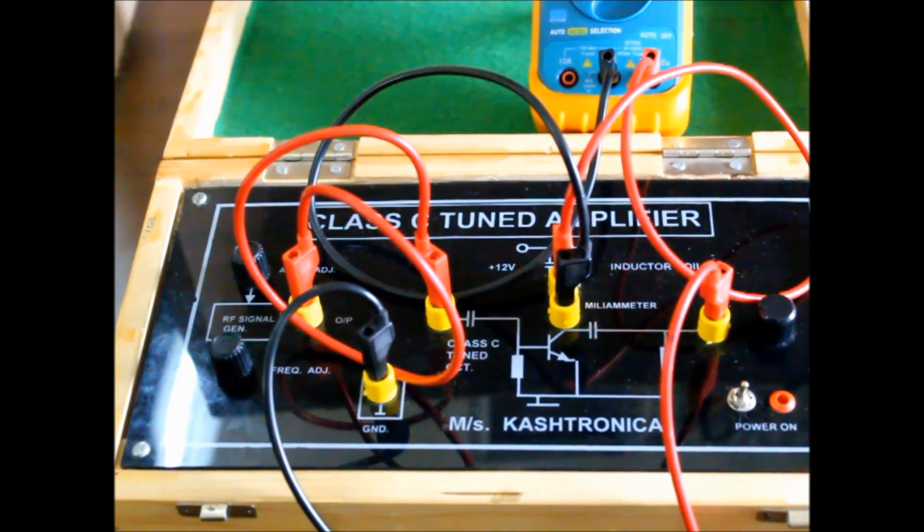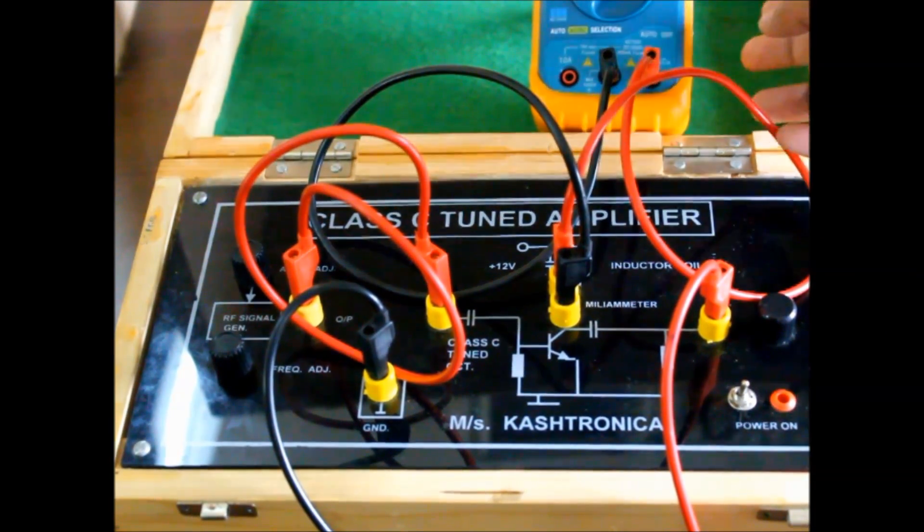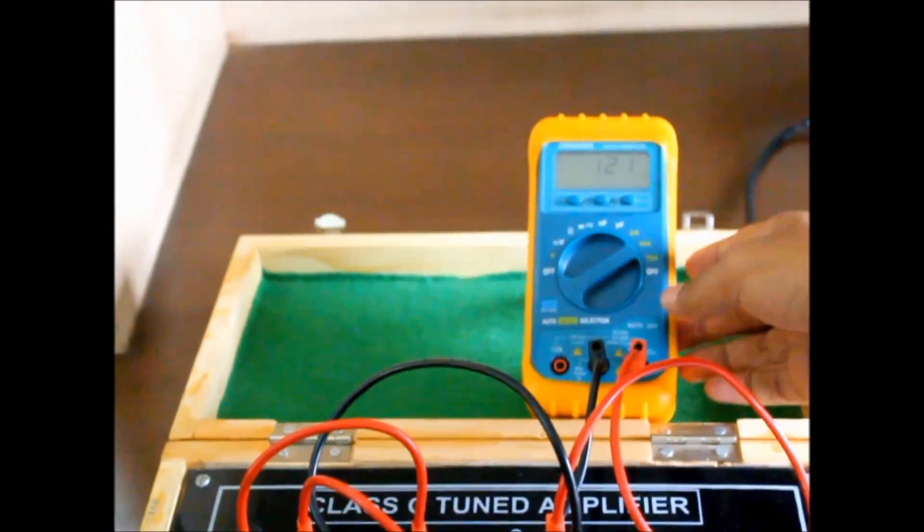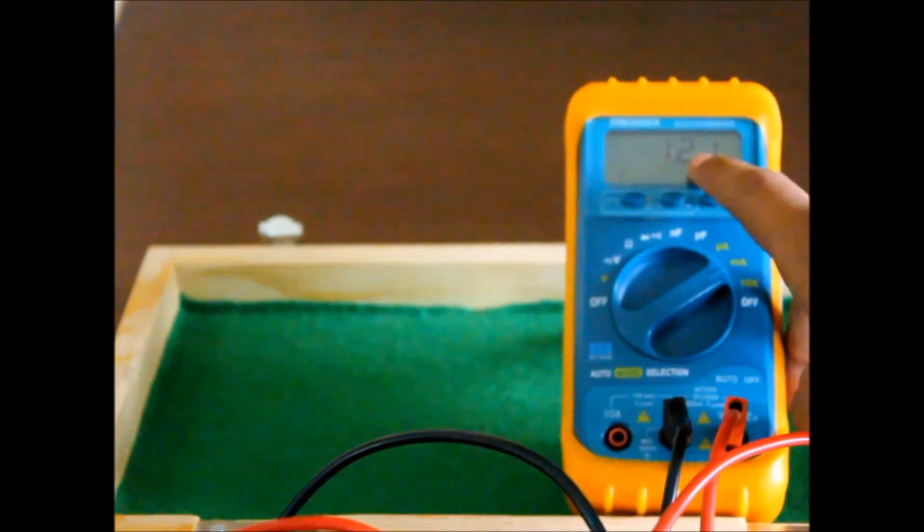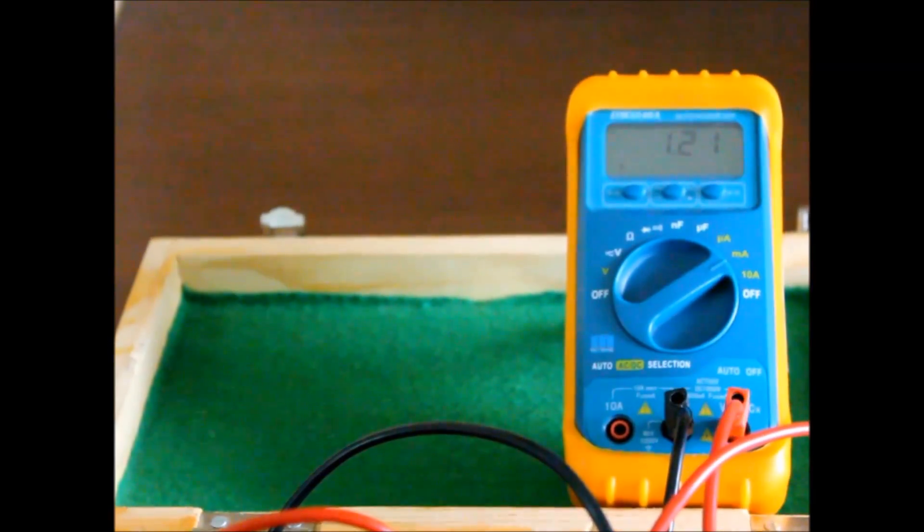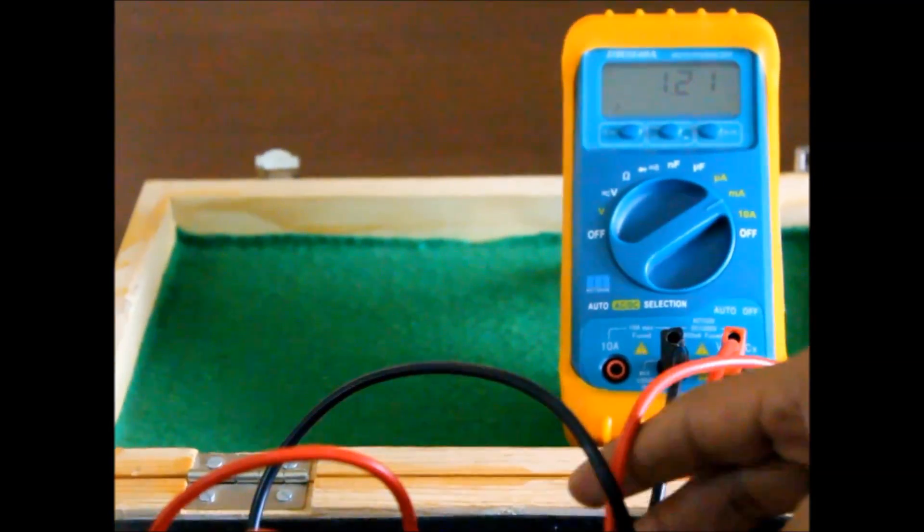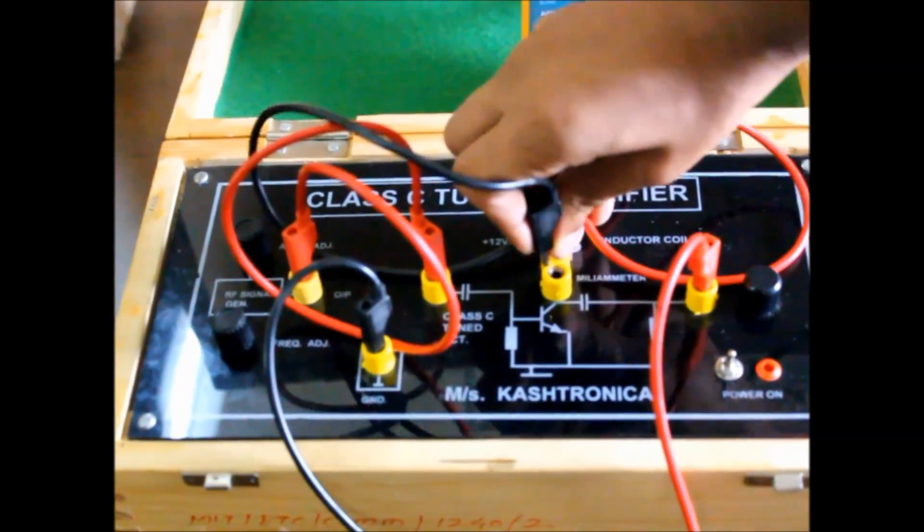So now, as we took the tuned frequency, measure the current across various frequencies above and below it. So now we have measured across 480 kilohertz—it is 1.21 milliampere. Take two to three readings like that. And for measuring voltage, just short these terminals.